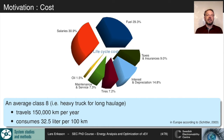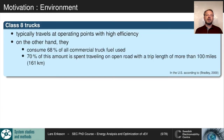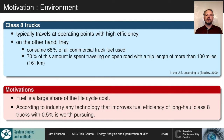The motivation for this research is that fuel is a really large share of the total cost of truck ownership. A rule of thumb is one third is fuel over the lifetime, one third is salaries, and the rest is maintenance, service, purchase cost, taxes, and insurance. A truck consumes around 32 liters per 100 kilometers. Class 8 trucks typically travel at operating points with high efficiency yet consume 68% of all commercial truck fuel, and 70% of that amount is spent traveling on open road with trip lengths over 100 miles. According to industry, any technology improving fuel efficiency by half a percent is worth pursuing.